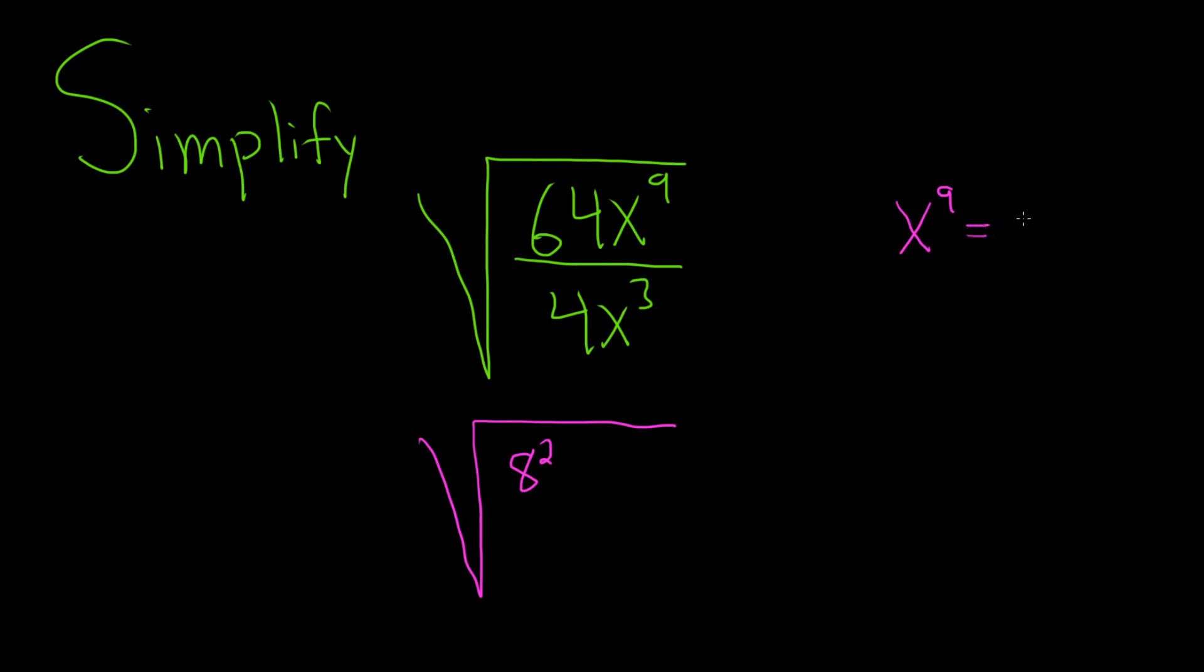So x to the 9th can be written as x to the 8th times x to the 1. And that's because when you multiply things with the same base, you actually add the exponents. And so now we can write the 8 as x to the 4th squared.